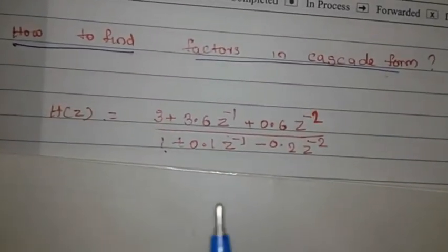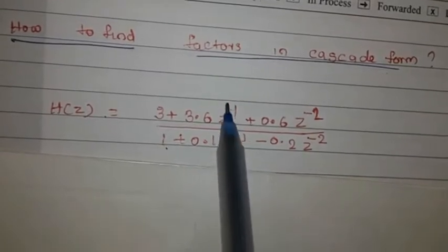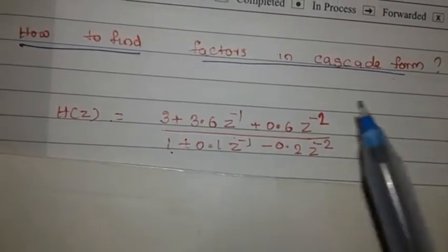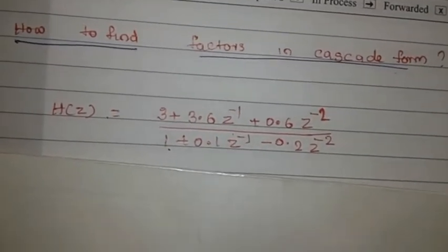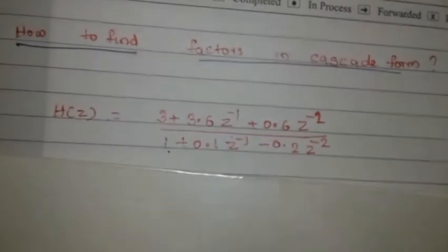When we are doing a cascade form, we have factors: numerator, denominator and denominator. So, how do we use the calculator?